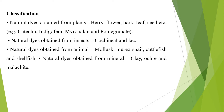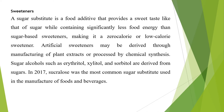Natural dyes can also be obtained from insects — for example, cochineal and lake — and from animals such as mollusks, murex snail, cuttlefish, and shellfish. Natural dyes from minerals include clay, ochre, and malachite.